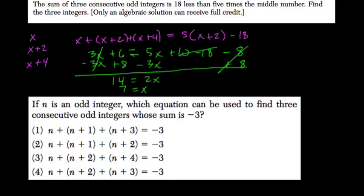So that means, find the three integers. Our three integers, if x is 7, that's our first, then we have 9, and then 11. And you can test this.